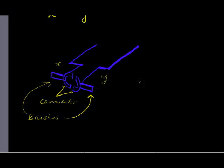And then the question asks us to draw a split ring commutator and brushes connected to X and Y, which is already shown by the figure here. Alright.